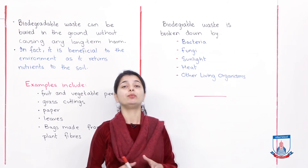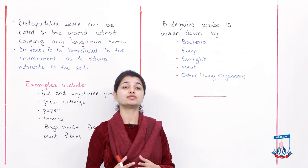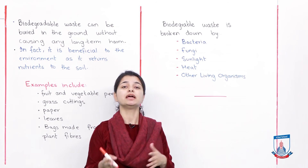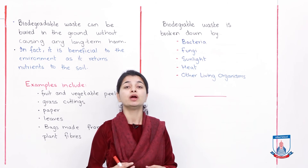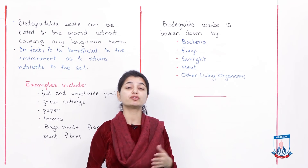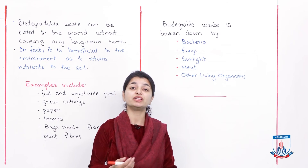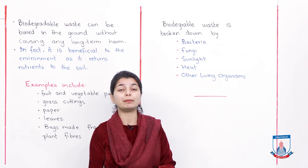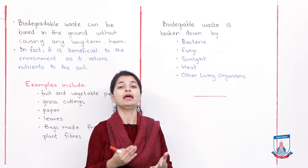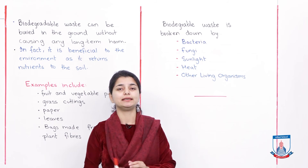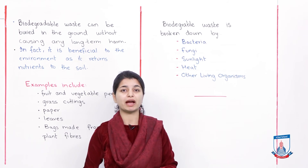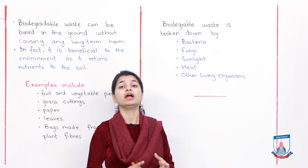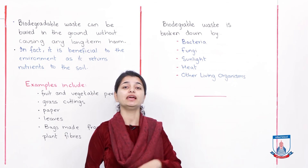So what we have covered in this lecture: we talked about biodegradable waste, which basically can decompose. Animals, plants, and everything made by animals and plants is biodegradable. Biodegradable waste, when added to the ground, causes no damage — in fact it is useful because nutrients are removed from it and returned to the soil. Examples include fruits and vegetables, grass cuttings, leaves, paper, and other small things that can be decomposed.